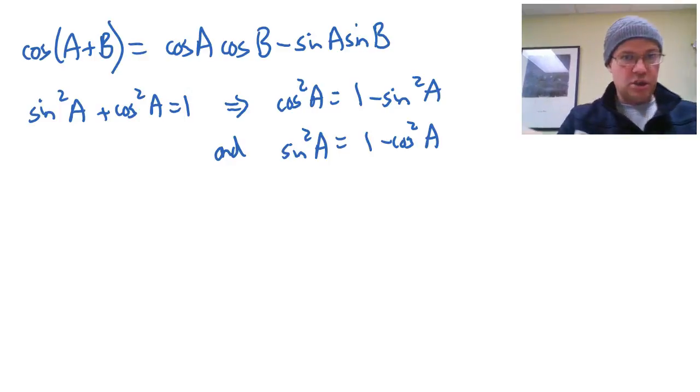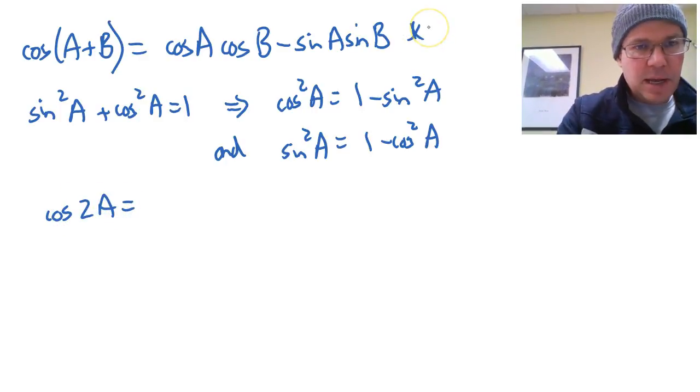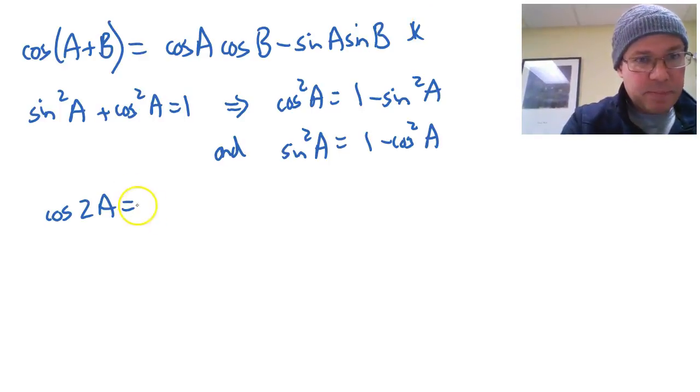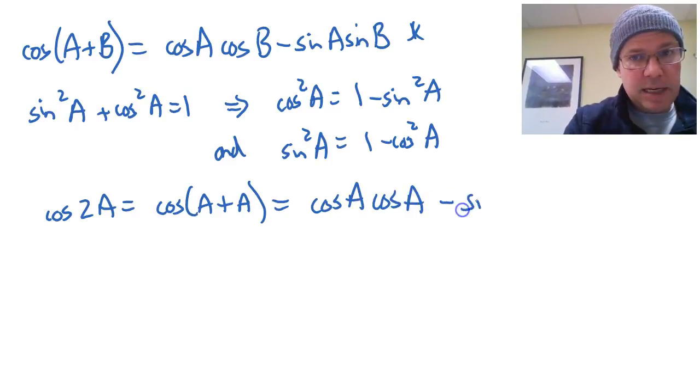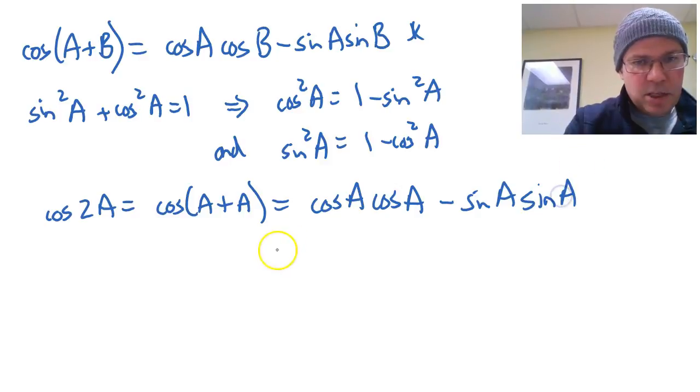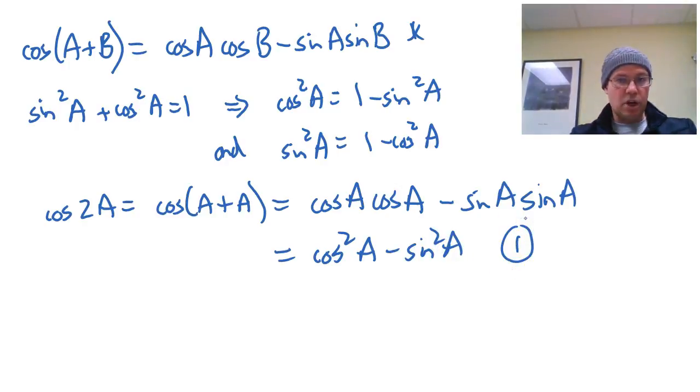So here we go, cos 2A. So there are three formulas for cos 2A and how we get them is we look at the formula above for cos A plus B and we swap the B for an A. So we do cos 2A is cos of A plus A and of course cos A plus A is cos A, instead of doing cos B I write another cos A minus sin A and of course instead of sin B I write sin A. So what I end up there is an equation cos squared A minus sin squared A and there's one equation for cos 2A.